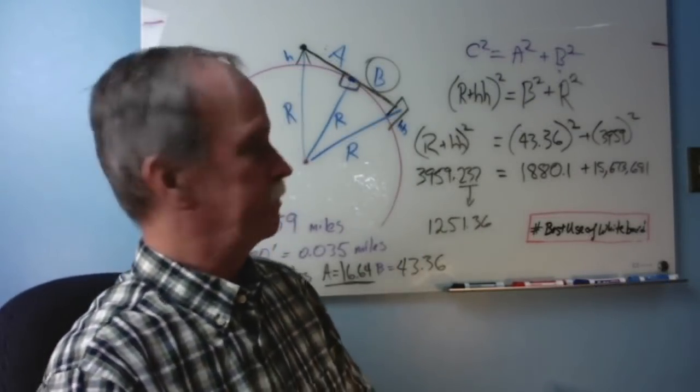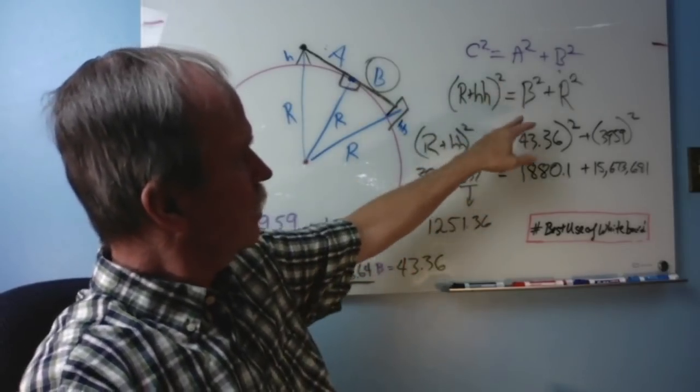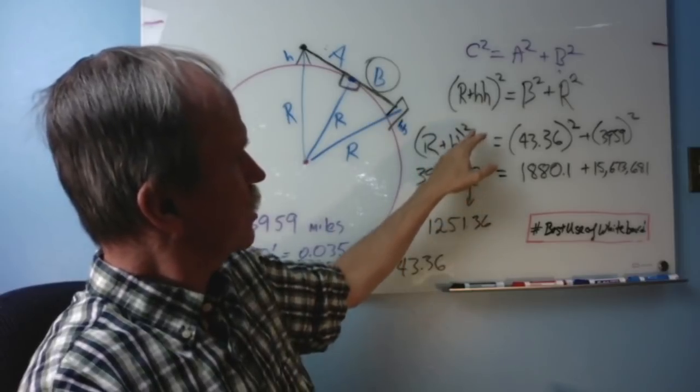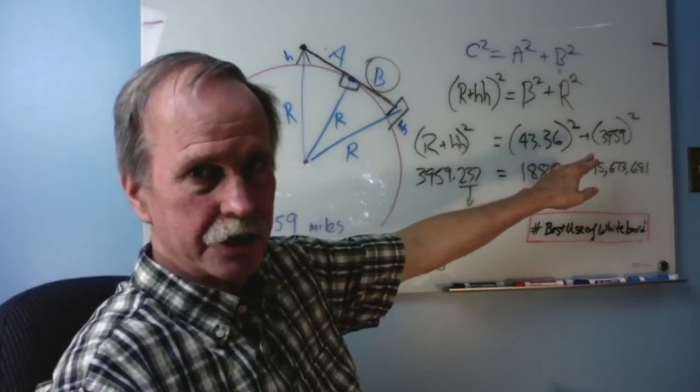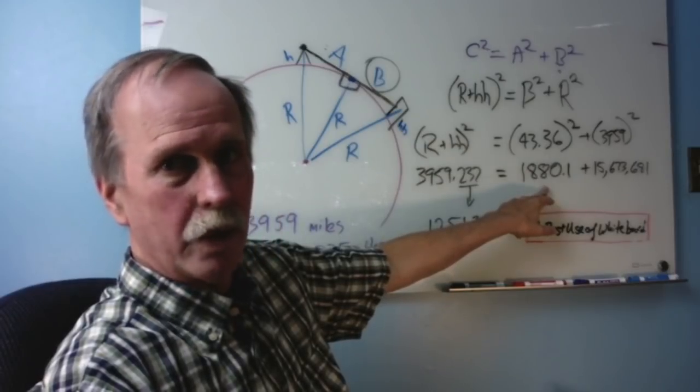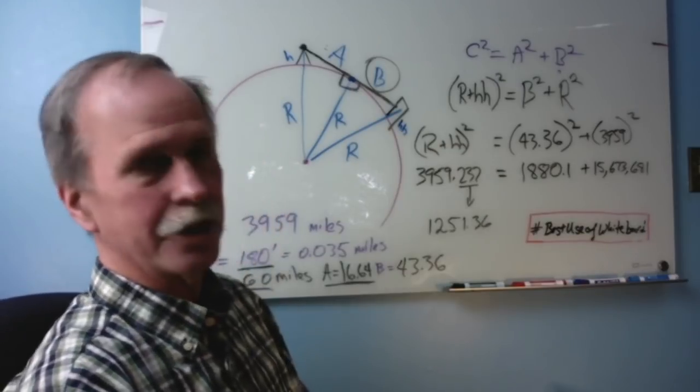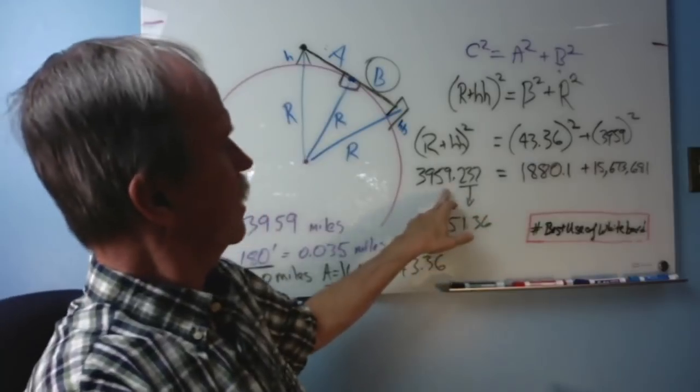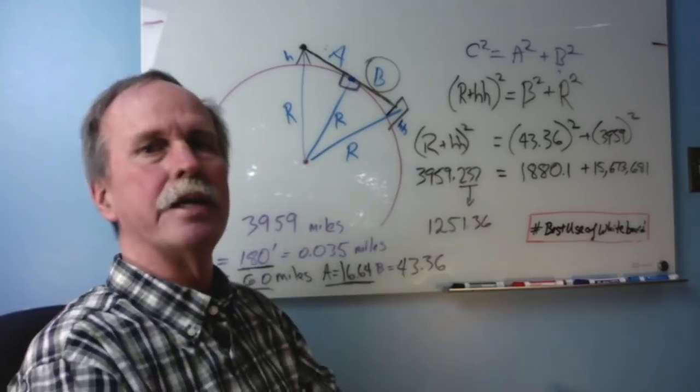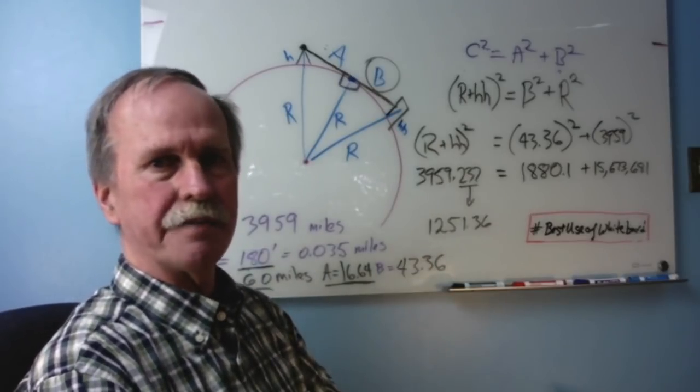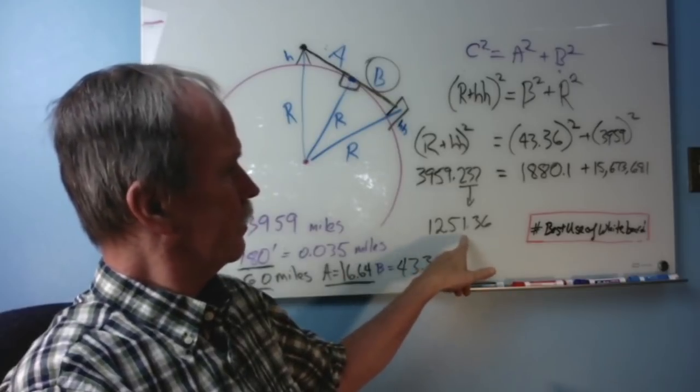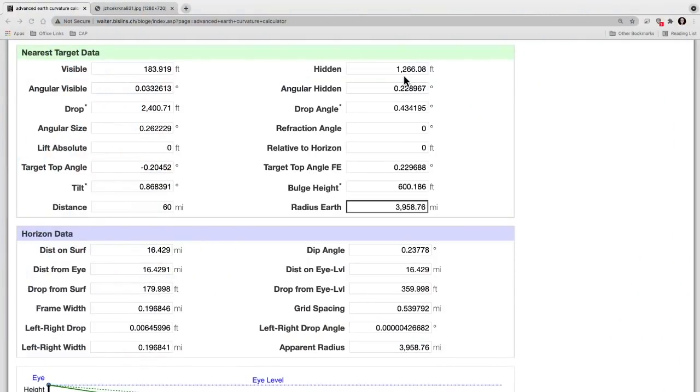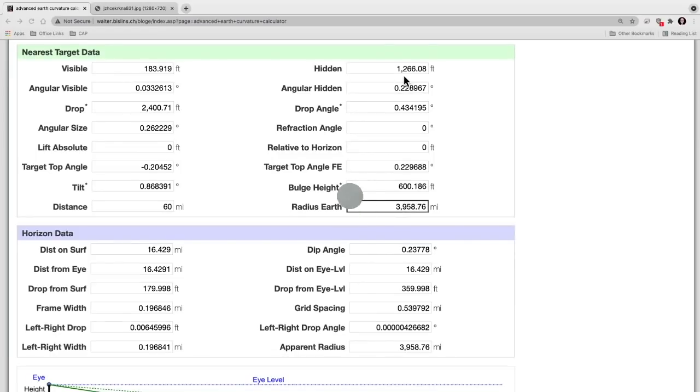Let's go ahead and put some numbers on this bad boy. Now recall that the radius of the earth plus the hidden height squared equals B, the distance from the horizon to the building squared, plus the radius of the earth squared. Radius of the earth plus hidden height squared equals 43.36 squared plus 3959 miles squared. And then that gives us 1880.1 and 15,673,681, which is the radius of the earth squared. Now when you add these two together, you get a great big number. You take the square root of that number and you get 3959.237. Now since the radius of the earth is 3959, the 0.237 miles is the hidden height of the building. Works out to 1251.36 feet. Let's go ahead and see what the curve calculator said. Well, the curve calculator came up with 1266.08 feet, a difference of about 15 feet. So why is it 15 feet different? Well, probably just little rounding errors.